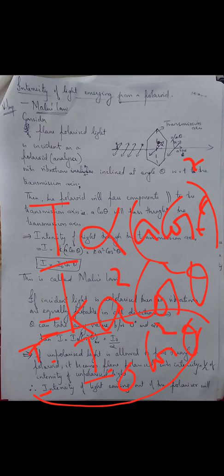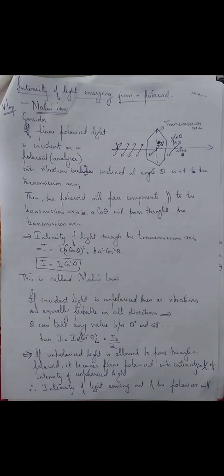Malus's law gives you the intensity of light which emerges out of a polarizer or a polaroid when a beam of plane polarized light is incident at some particular angle theta with respect to the transmission axis. It can also be used to find out the intensity of plane polarized light coming out of a polarizer when unpolarized light is incident on it.